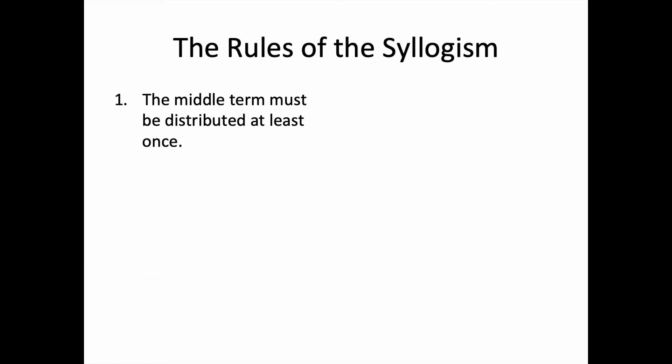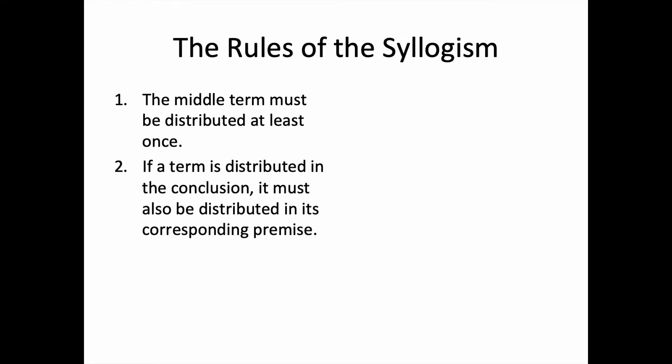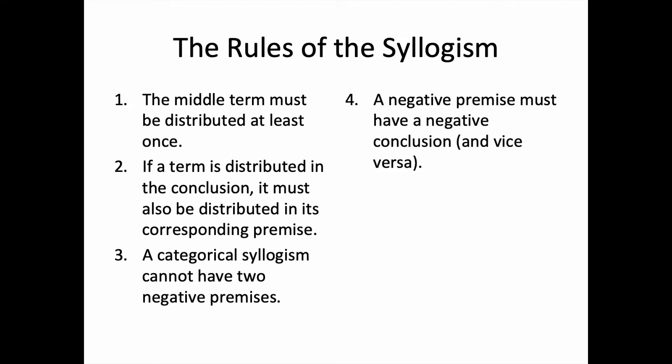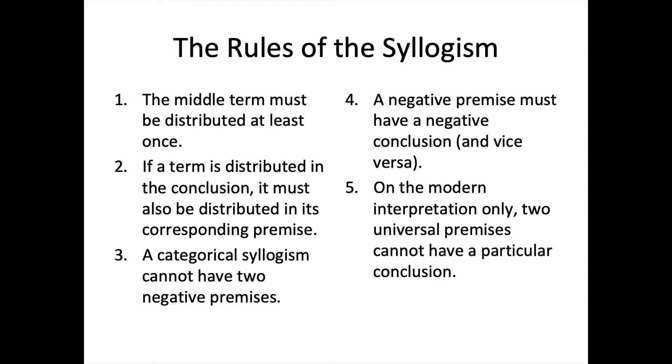First, the middle term must be distributed at least once. Second, if a term is distributed in the conclusion, it must also be distributed in its corresponding premise. Third, a categorical syllogism cannot have two negative premises. Fourth, a negative premise must have a negative conclusion, and vice versa. And lastly, on the modern interpretation only, two universal premises cannot have a particular conclusion.